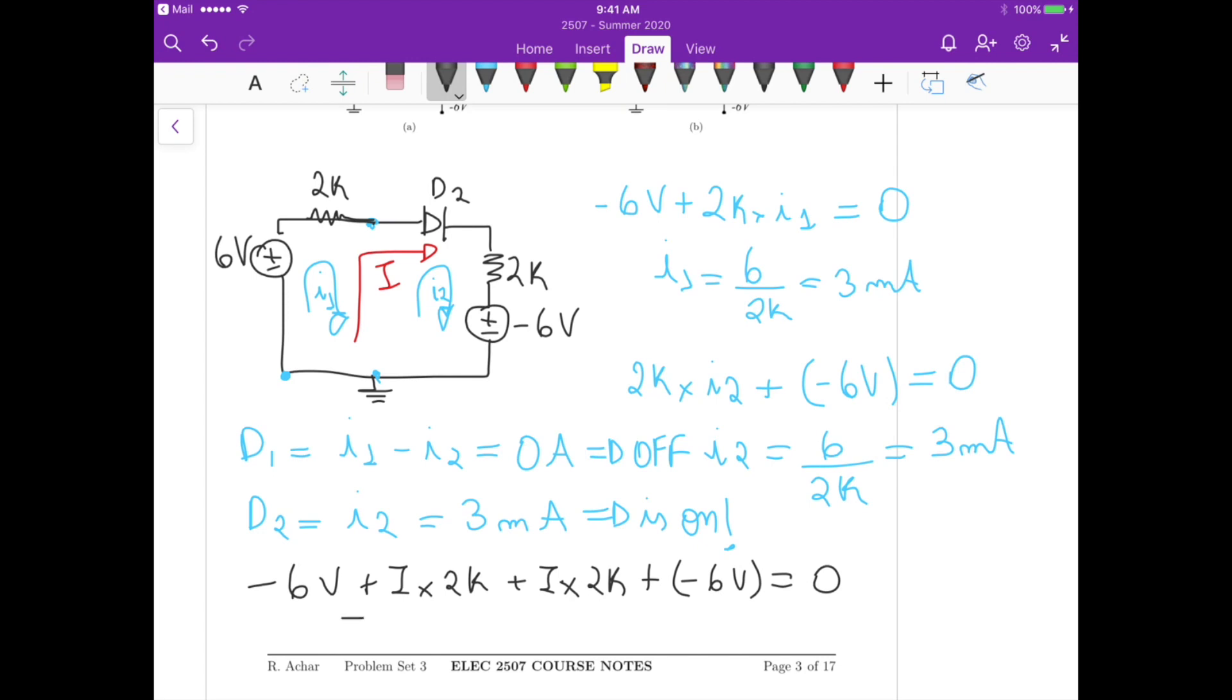Now, if we isolate I here, I is equals to minus 6, minus 6, minus 12, goes to the right-hand side, 12, divided by 2K plus 2K, 4K, and that's equals to 3 milliampere. And it's positive, so indeed, D2 is on.